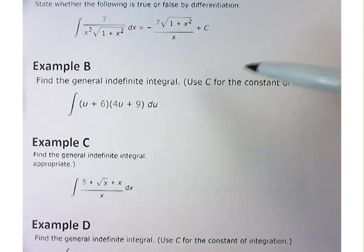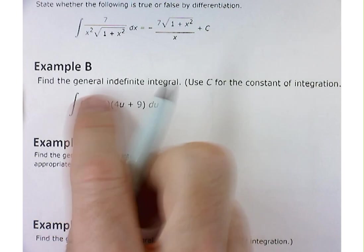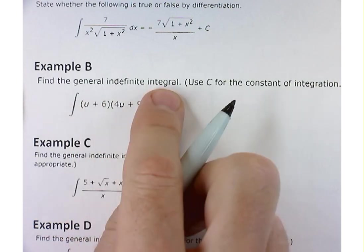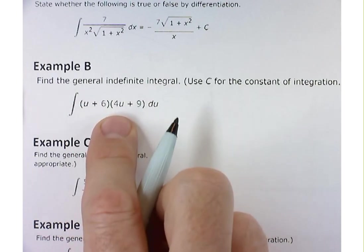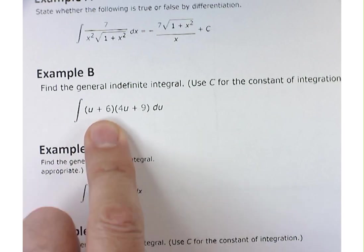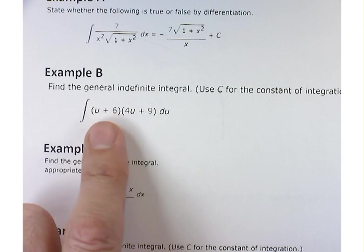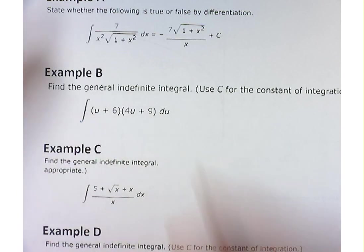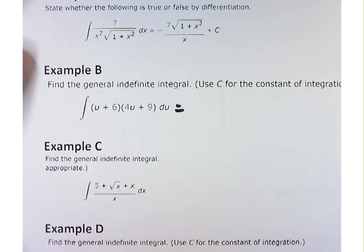For our purposes, we're going to start out with example B, and we need to find the general indefinite integral. Basically, that's asking you to find the antiderivative. But you can't find the antiderivative starting here because you can't integrate a product as the product of the integrals. It just doesn't work. So what we've got to do instead is rewrite this.